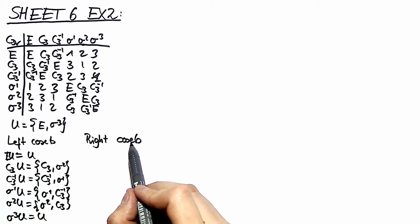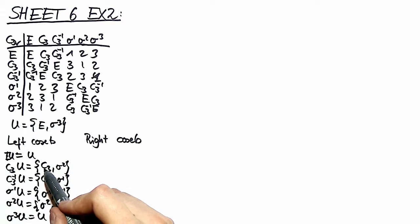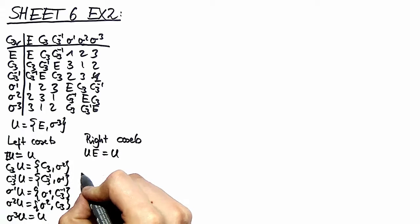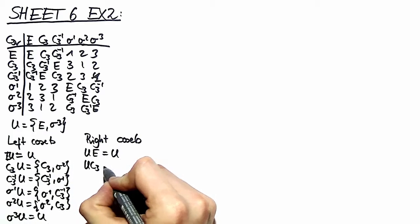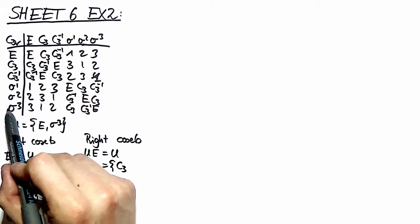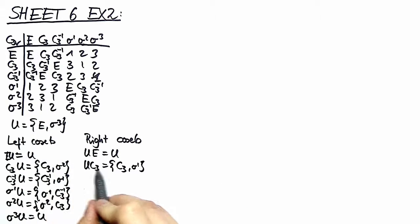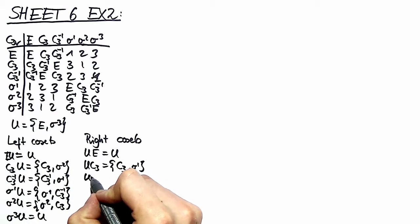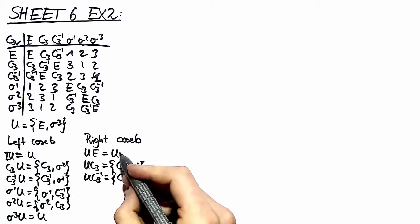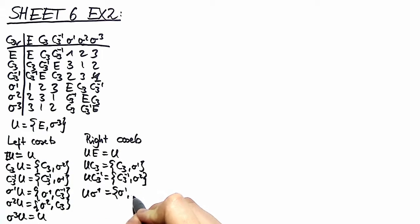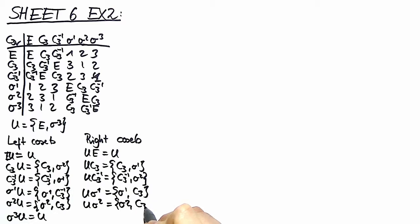Now we want to make the observation that right cosets yield different sets of elements of C3V. U times E is again U. Then U times C3 yields {C3, sigma1} — we take sigma3 first and multiply with C3, which gives us sigma1. So we see here a difference. The other cosets differ as well: U times C3⁻¹ yields {C3⁻¹, sigma2}, multiplying with sigma1 gives {C3, sigma1}, multiplying with sigma2 gives {C3⁻¹, sigma2}, and the last of course stays the same.